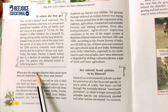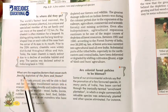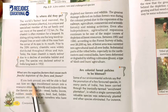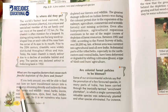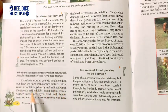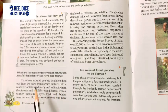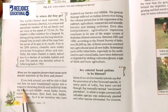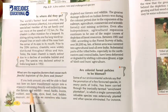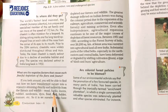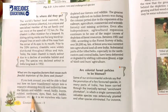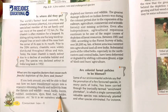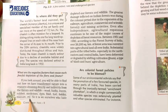What are the negative factors that cause such fearful depletion of flora and fauna? We ourselves have transformed nature into a resource, obtaining directly and indirectly from forest and wildlife — wood, barks, leaves, rubber, medicine, dyes, food, fuel, fodder, manure, etc. It is we who have depleted our forests and wildlife.